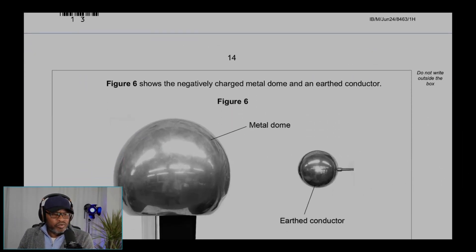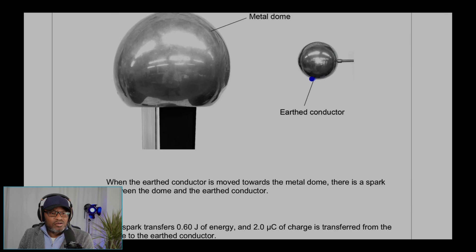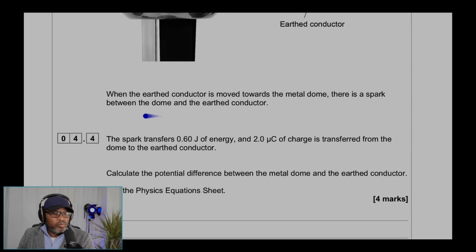Question 4.4. Figure 6 shows the negatively charged metal dome and an earthed conductor. When the earthed conductor is moved towards the metal dome, there is a spark between the dome and the earthed conductor.